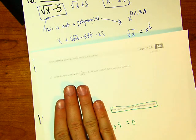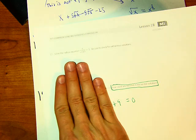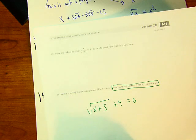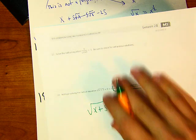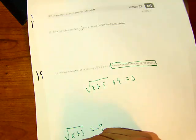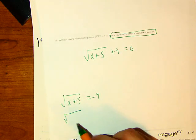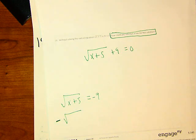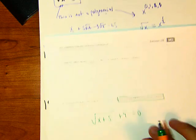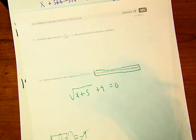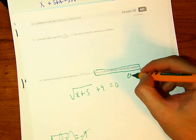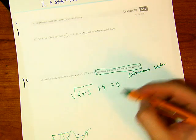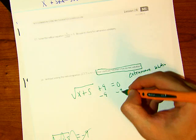If you have a positive 9, that means square root of x plus 5 would have to equal negative 9. But the square root of any number cannot be negative — not unless you force a negative on the outside. So without even solving, we know this equation has no solution.